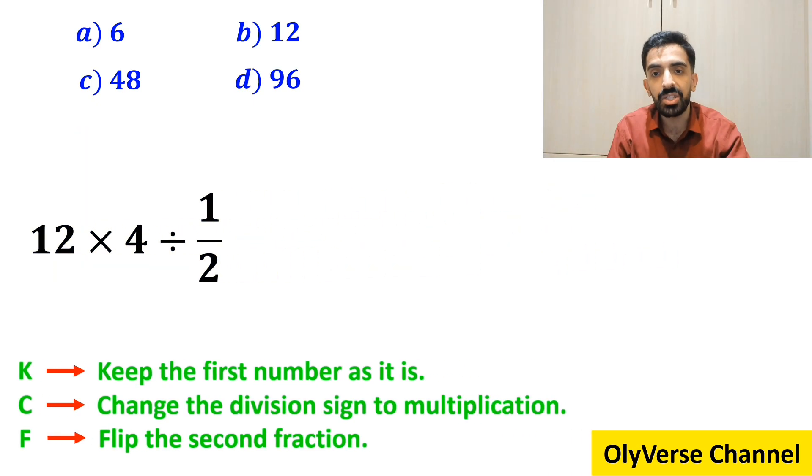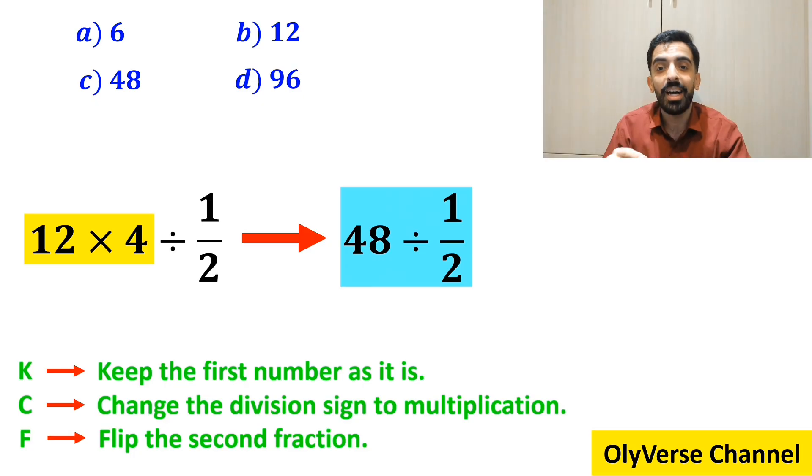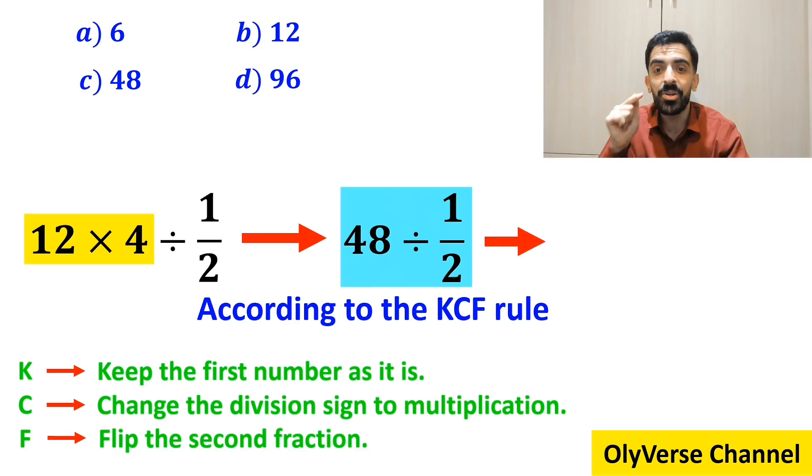In the next step, we multiply 12 by 4, which simplifies it to 48 divided by 1 over 2. And for the part which I have highlighted in blue, according to the KCF rule, we write it as 48 times 2, which results in the final answer 96.